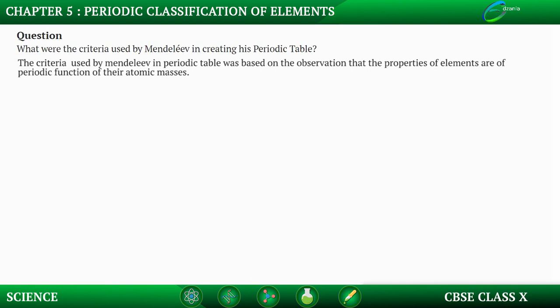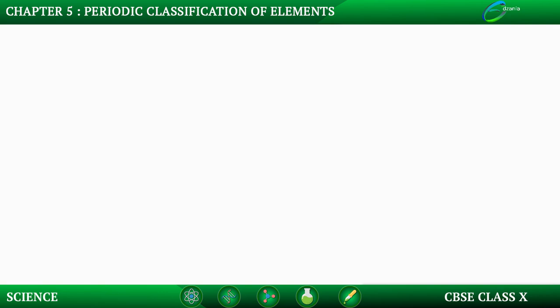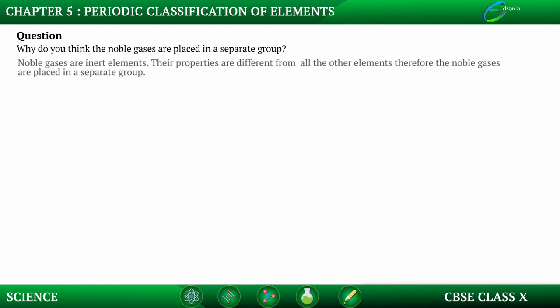Question: Why are noble gases placed in a separate group? Noble gases are inert elements whose properties are different from all other elements, and therefore they are placed in a separate group. The next topic will cover a different way of classifying the elements.